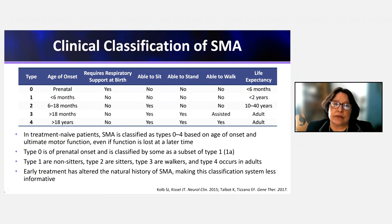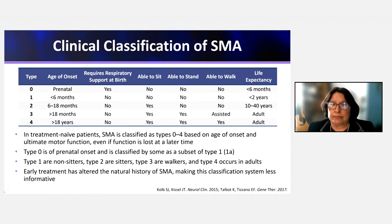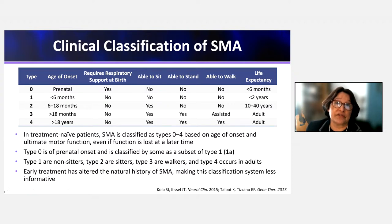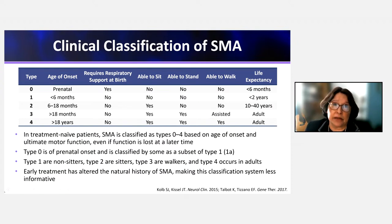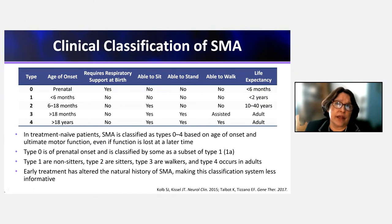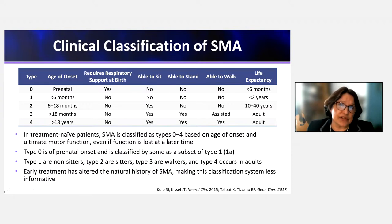SMA type 3 patients are ambulatory, presenting in the pediatric age after 18 months and before 18 years. They can walk at some point, though they may lose that ability — especially if they present under age 3. Finally, SMA type 4 patients are very mildly affected, presenting in adulthood over age 18. They are usually ambulatory and do not have major or rapid progression as seen with other phenotypes.